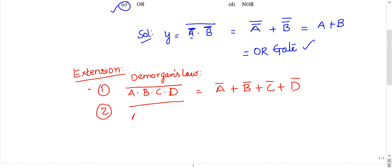If it is sum of all the terms complemented, then it changes to product. So this is De Morgan's law. Other than De Morgan's law.